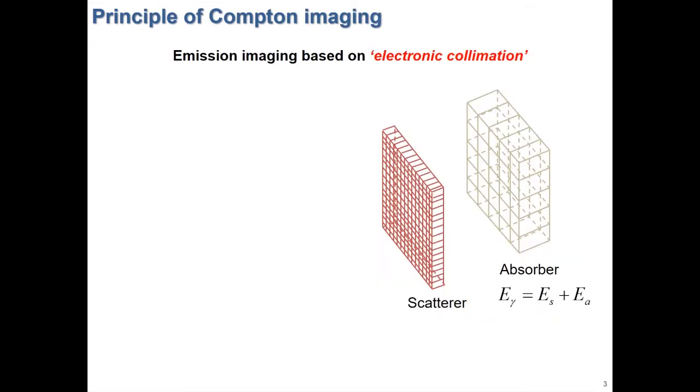Compton cameras can be used to visualize the location of radiation sources which is not visible to naked eyes. Compton cameras are generally composed of multiple position-sensitive gamma ray detectors.